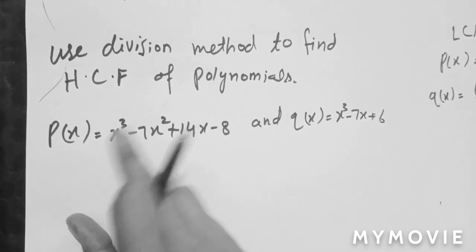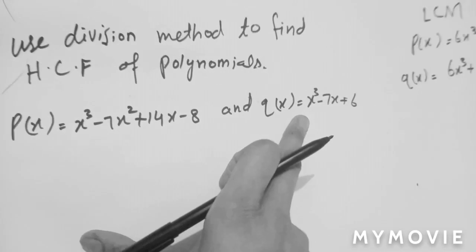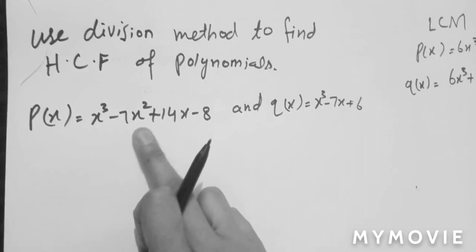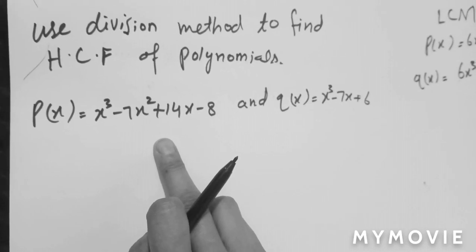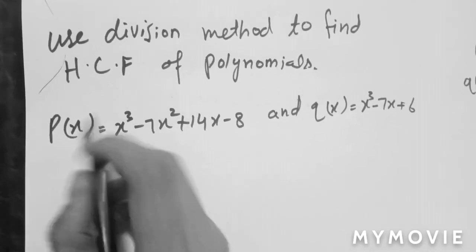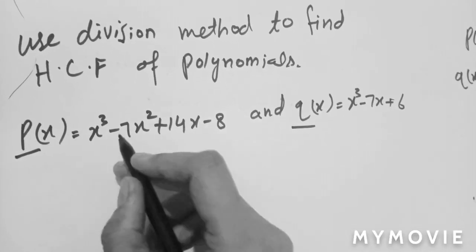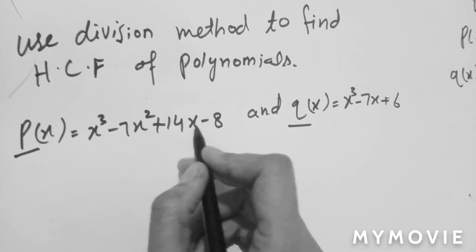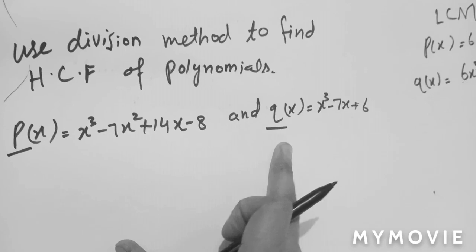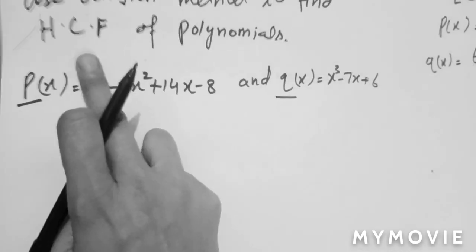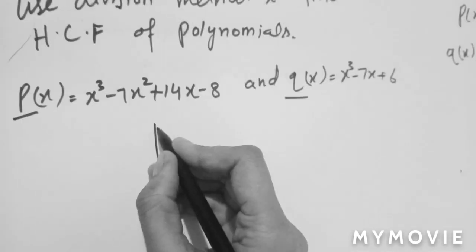Use the division method to find the HCF of polynomials: p(x) = x³ - 7x² + 14x - 8 and q(x) = x³ - 7x + 6. How will we divide it and take its HCF? There are two polynomials — the first is p and the second is q, where x is the variable. Now I'm going to write it. Kindly watch.